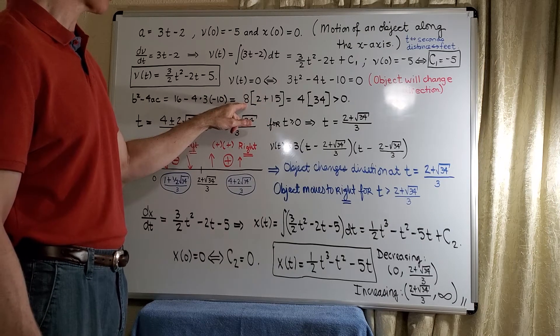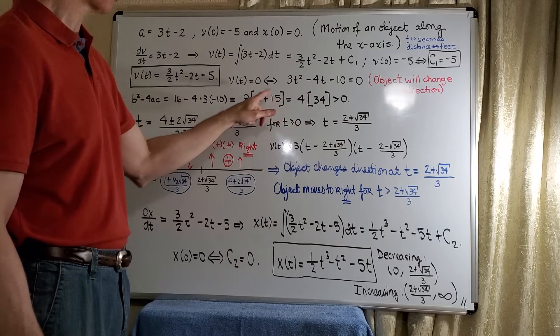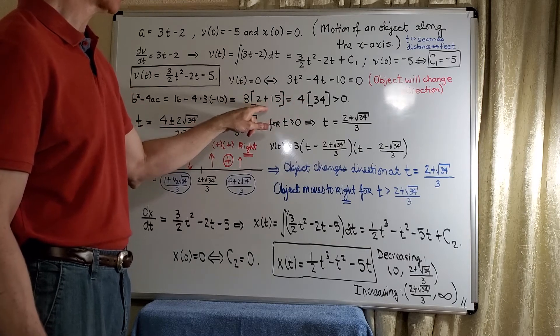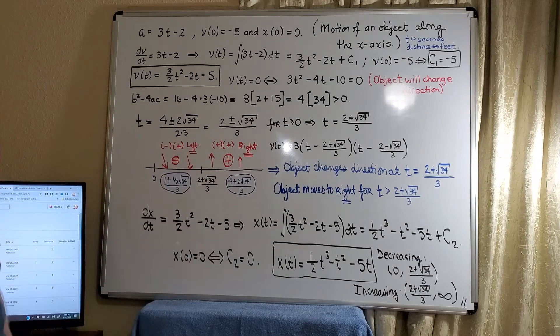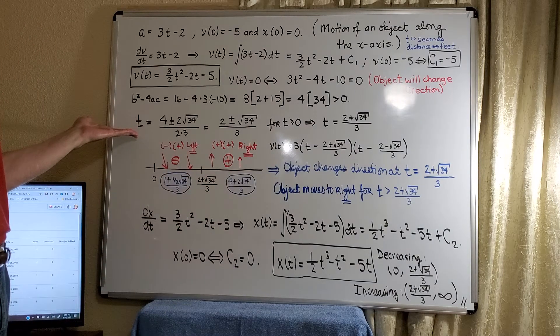But 8 is not a perfect square, but 4 is. So we'll just run the 2 inside and get 2 times 17, which is 34. That's a positive number, and so we apply the quadratic formula.